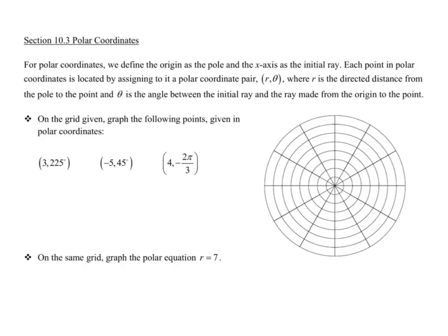For polar coordinates we define the origin as the pole and the x-axis as the initial ray. Each point in polar coordinates is located by assigning to it a polar coordinate pair (r, θ), where r is the directed distance from the pole to the point and θ is the angle between the initial ray and the ray made from the origin to the point.